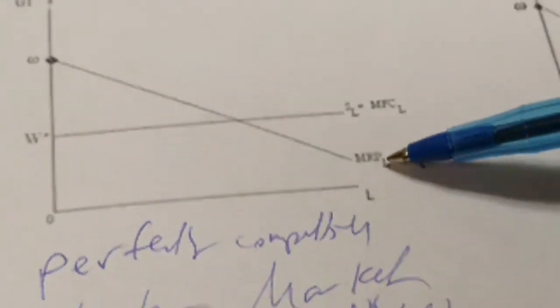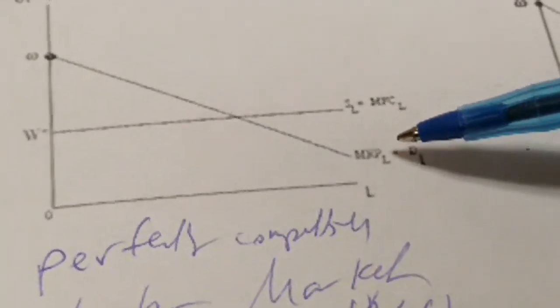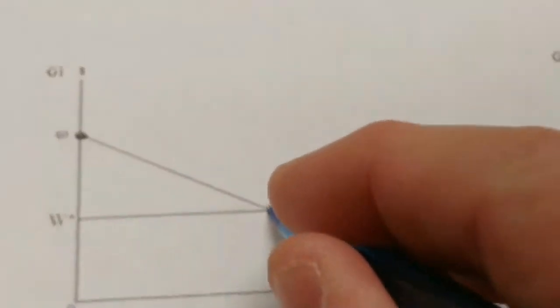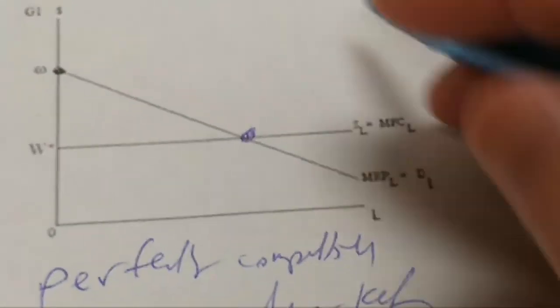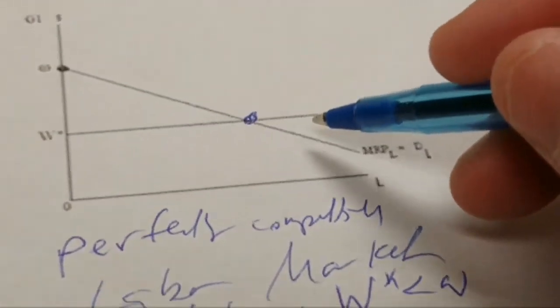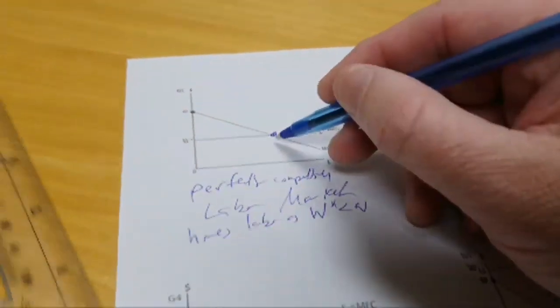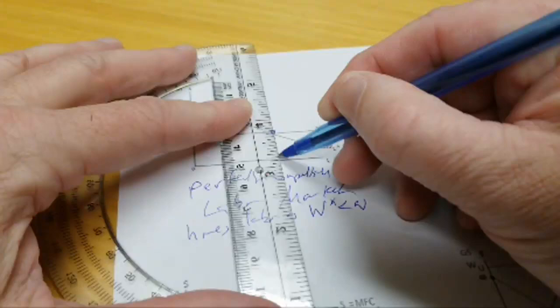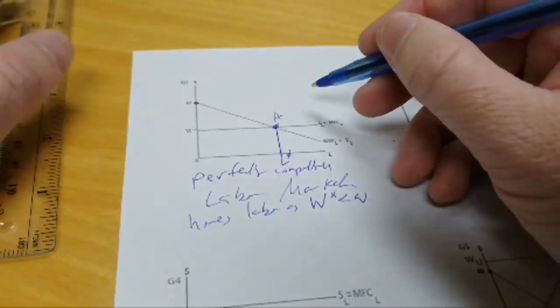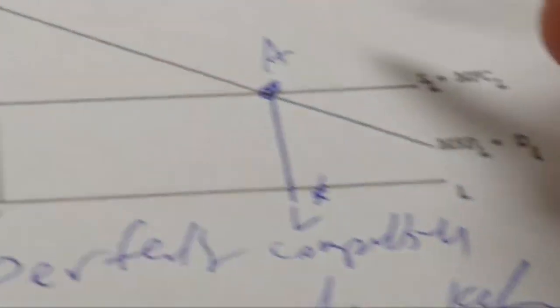Now, remember our rule for hiring labor. If the firm hires labor, it hires L star workers corresponding to MRP being equal to MFC. The MRP of labor curve functions as a firm's labor demand curve, and here's the MFC of labor curve, which the labor supply is sitting on top of. MRP is equal to MFC right where they intersect there. We make the intersection here, we go straight down to the labor axis, and there's L star. Corner A is always on the same line as W star or as the wage rate.